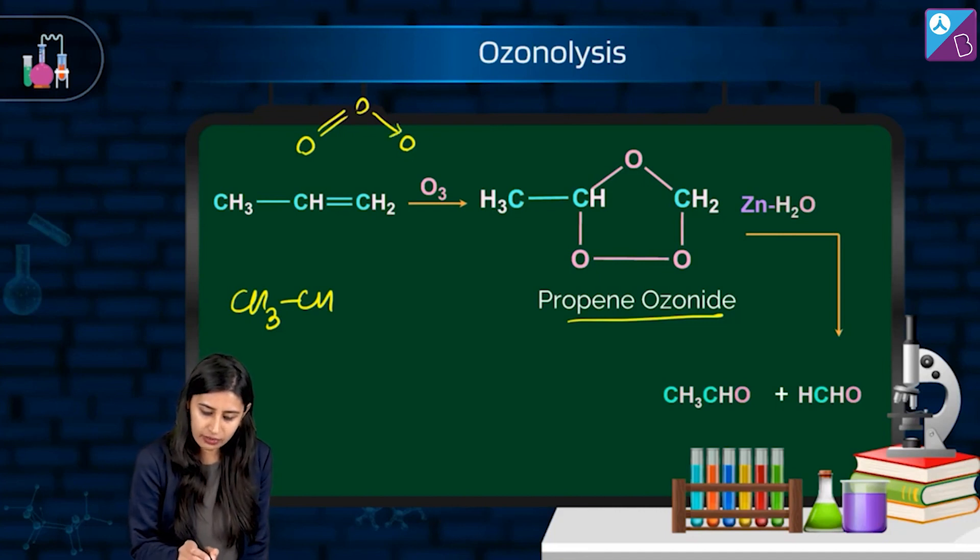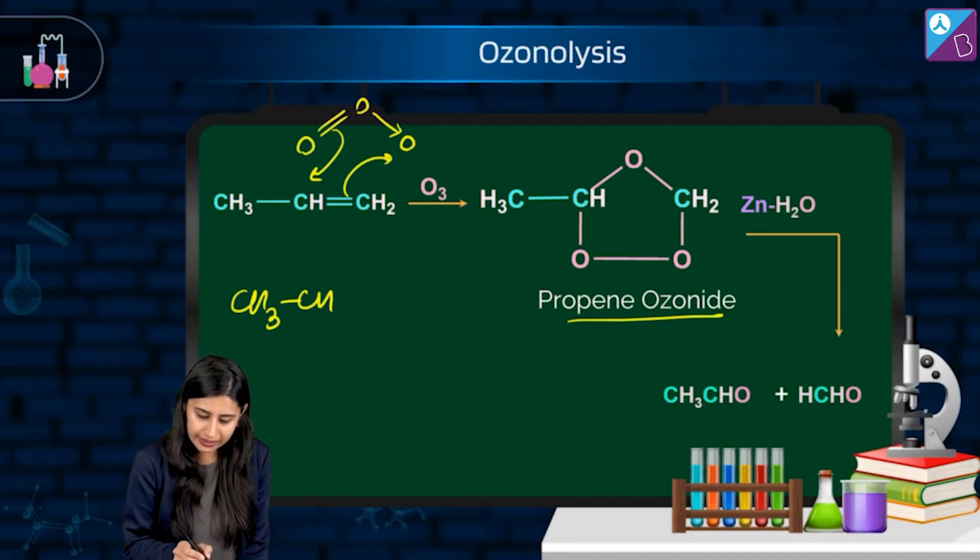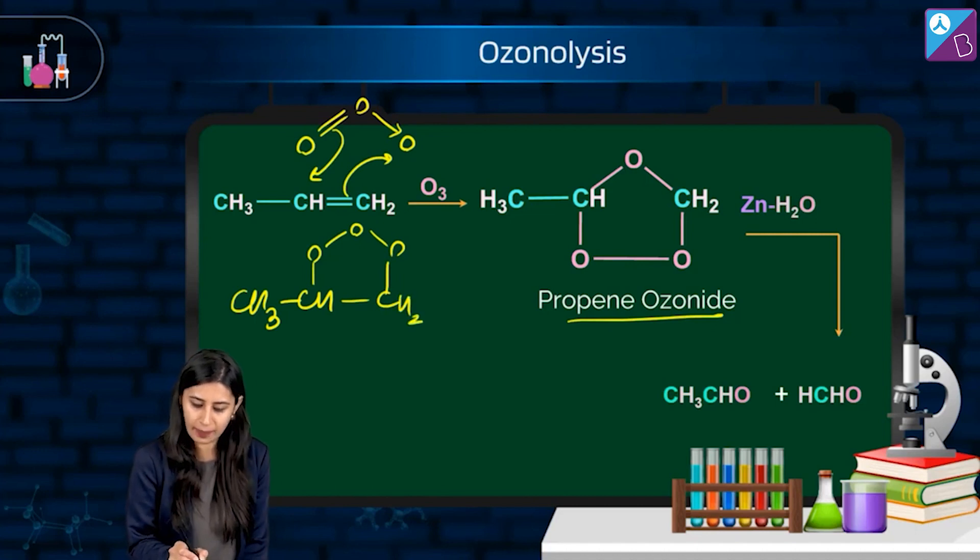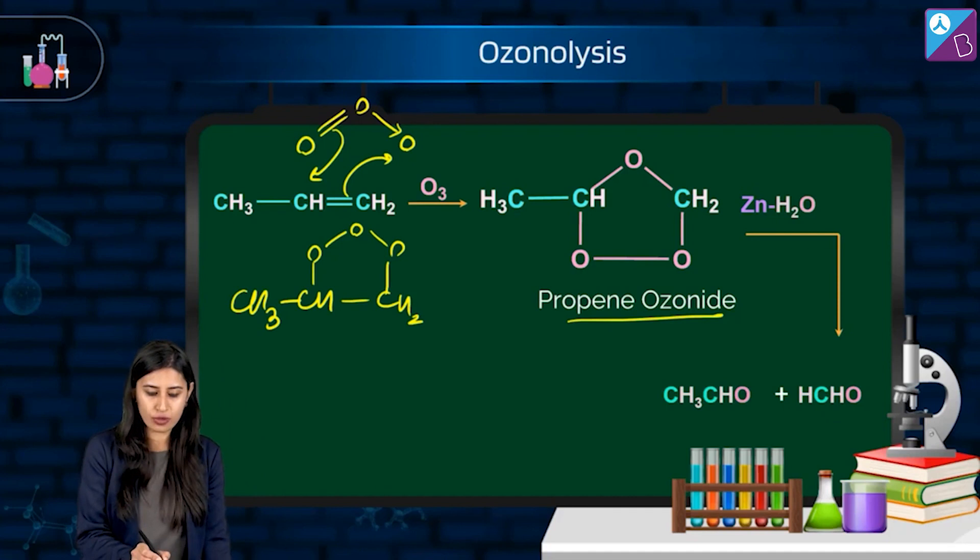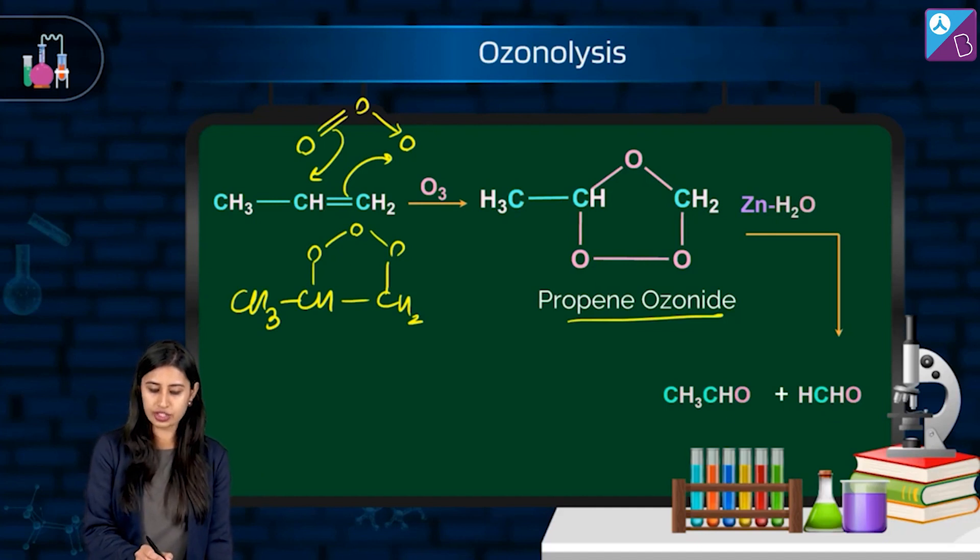This is how I can write the product that gets formed is first this, the three oxygens together. And then there is some sort of rearrangement to give you propene ozonide. And then if you add zinc in the presence of water, zinc H2O, you get CH3CHO and HCHO.